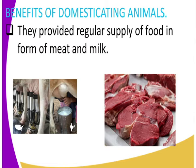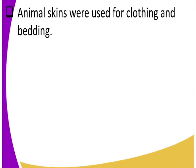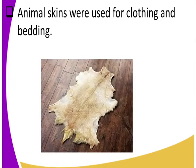Now, apart from cattle giving us milk and meat, they also give us skins, or rather what we call hides. The hides from animals were used for clothing and bedding. Early men used hides as cloth, and today we also use them as bedding. Look at that — that's the hide that has been dried up and it can be used as bedding.